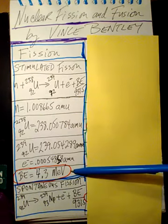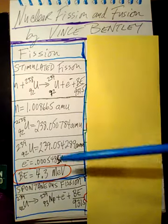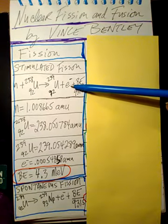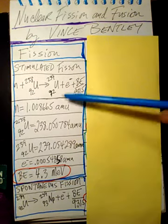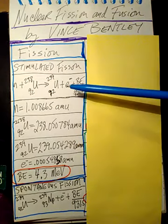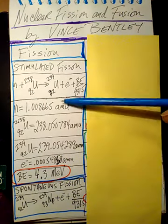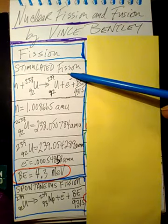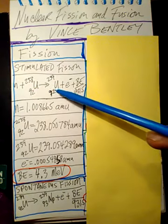4.3 MeV is a nuclear physics unit that's easy to use here. This is the maximum energy the electron will have coming out — it could have less than that, but 4.3 MeV is the maximum. We'll compare that with other reactions. This is our first reaction, called stimulated fission, because a particle was shot into a uranium atom and caused it to break apart.